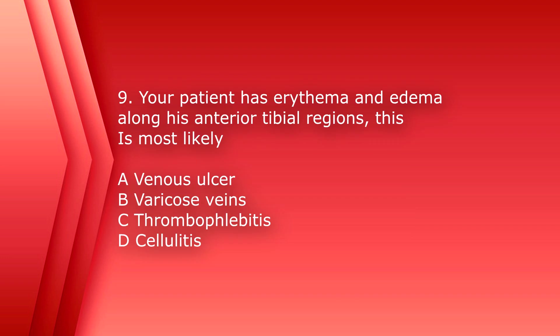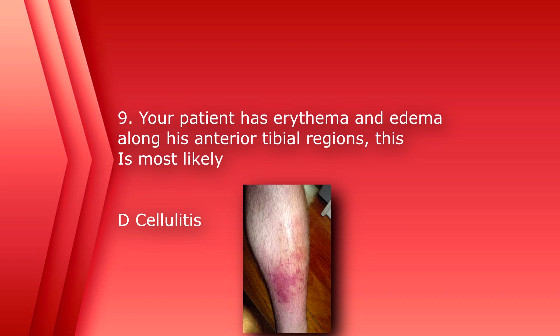Number nine. Your patient has erythema and edema along his anterior tibial regions. This is most likely A, venous ulcer, B, varicose veins, C, thrombophlebitis, or D, cellulitis. The answer is D, cellulitis. Cellulitis usually appears as edema and redness of the skin.